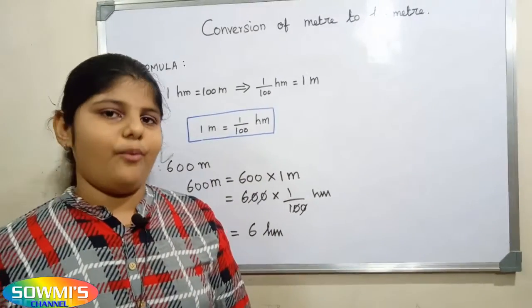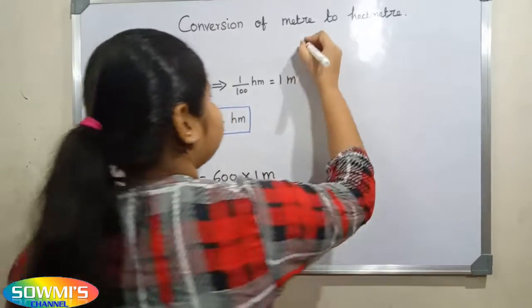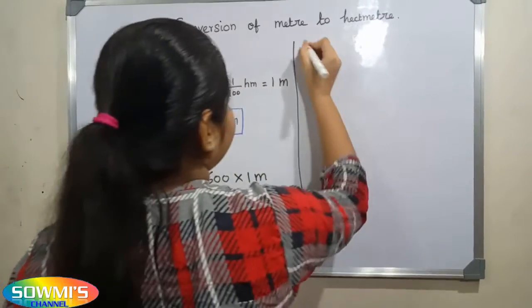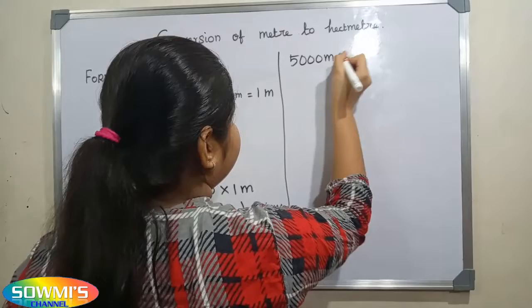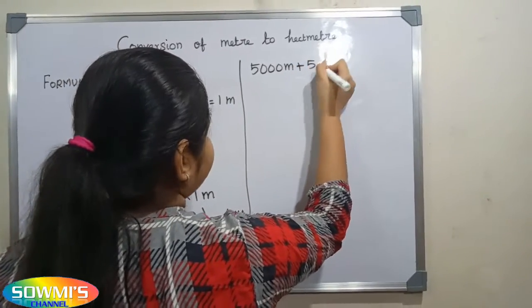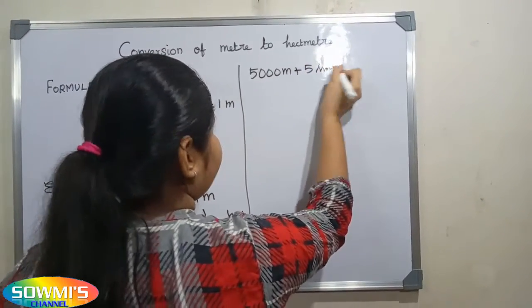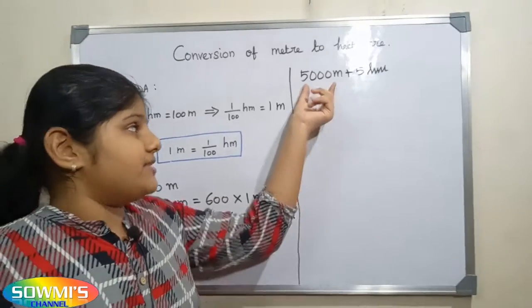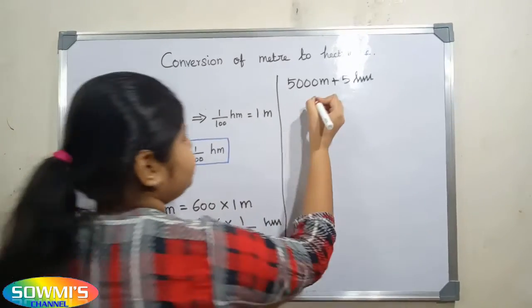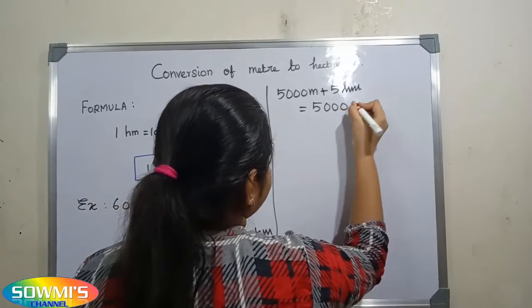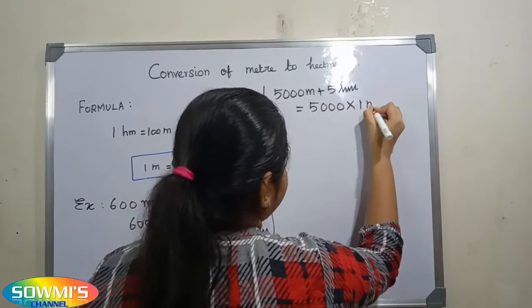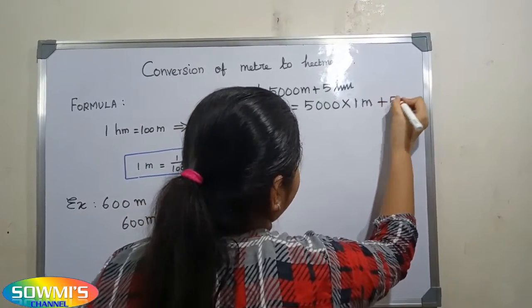Now we will take one more example: 5,000 meters plus 5 hectometers. 5,000 meters can be written as 5,000 multiplied by 1 meter plus 5 hectometers.